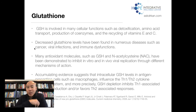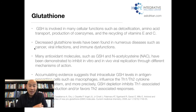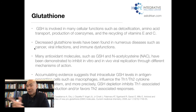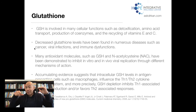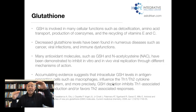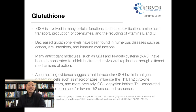Accumulating evidence suggests that intracellular glutathione in antigen-presenting cells such as macrophages influences the T-helper-1 / TH2 cytokine response. Glutathione depletion can inhibit T-helper-1-associated cytokine production and favor TH2-associated response. T-helper-1 cells are your natural killer cells. When people are chronically inflamed, you have suppression of those natural killer cells, which makes it so you can't fight off infection. Glutathione depletion can inhibit those natural killer cells — this is one of the reasons why chronic inflammation depletes glutathione levels.